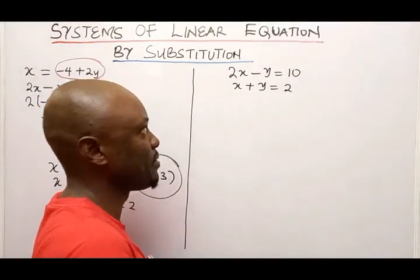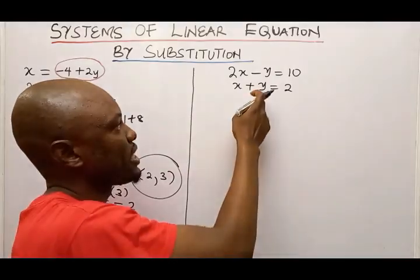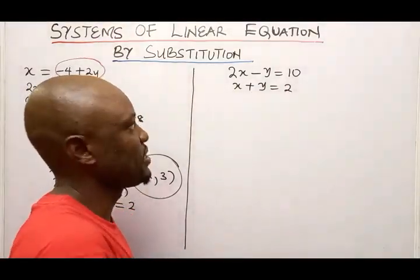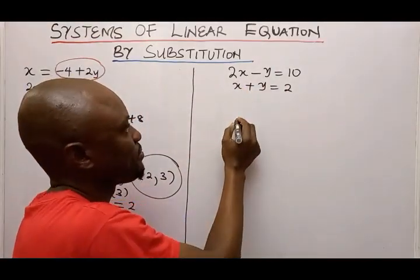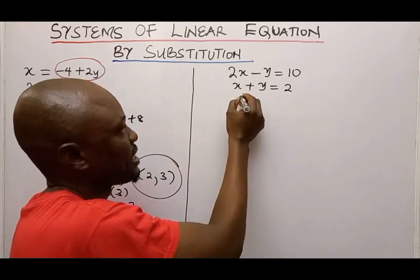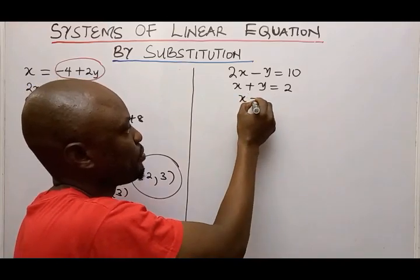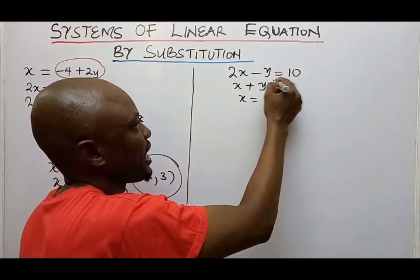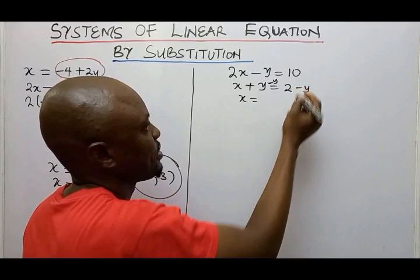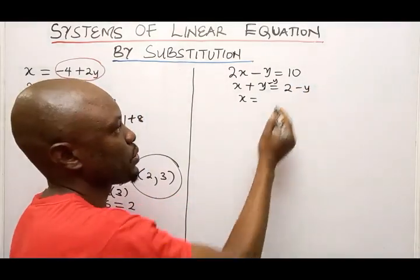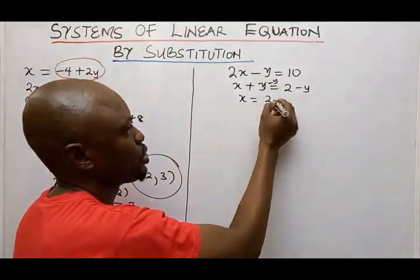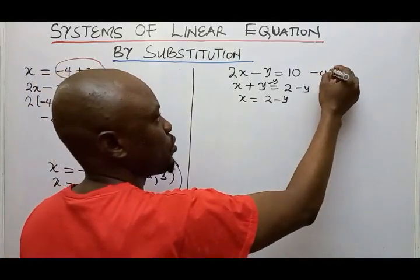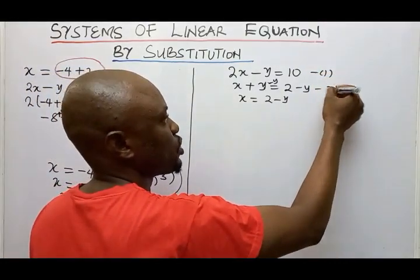If we express X in terms of Y, I'll subtract Y from both sides. Y minus Y will be 0, so I have X equals 2 minus Y. I'll call this equation 3, and remember that equation 3 came from equation 2.